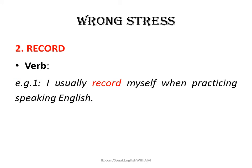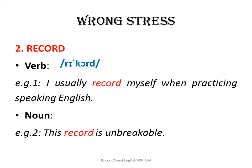Moving on, let's take a look at the next example. We have the verb record: 'I usually record myself when practicing speaking English.' In the second example, we use this word as a noun. To pronounce this word, we say record as a noun or record as a verb. Listen: 'This record is unbreakable.' So we stress the first syllable when this word is a noun, and the second syllable when it's a verb.